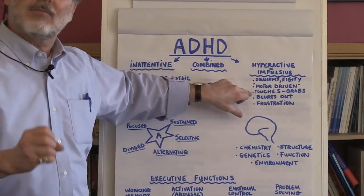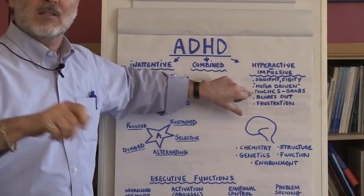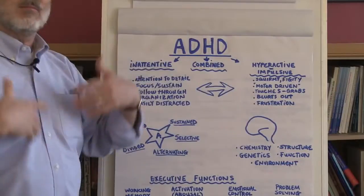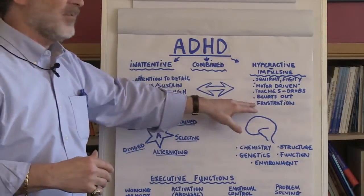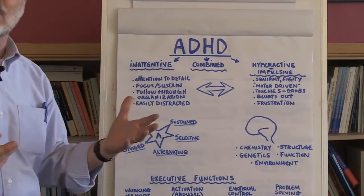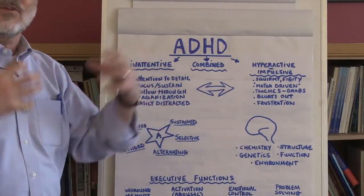Many of these children have difficulty keeping themselves from grabbing something or holding something or touching something. They'll often blurt out responses in class, they don't wait their turn, and often they have difficulty with frustration tolerance. They get frustrated really easily and it's hard for them to recoup.